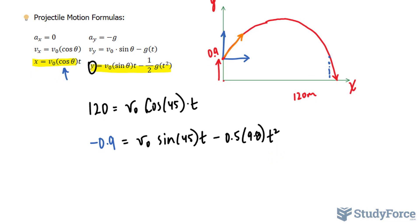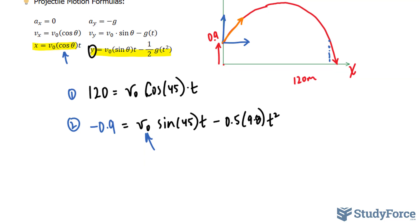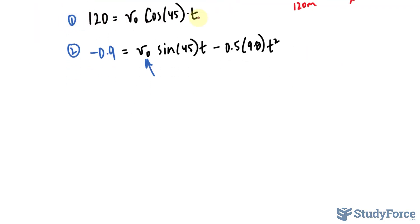The strategy moving forward is to isolate for v sub 0 in equation number 1 and substitute that expression into here. Because what that will do is give us a new formula that's exclusively in terms of t. We can find the value for t and substitute that back into one of the equations to find the value for the initial velocity. In case that's confusing to you, here's what I mean. So, I'll start with equation number 1 and I'll solve for that factor by dividing both sides by cosine 45 times t.